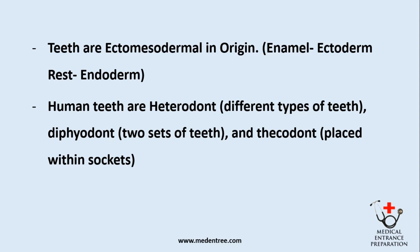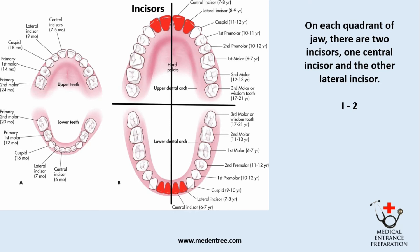Now let's begin with permanent teeth. On each quadrant of the jaw there are two incisors. When we divide the upper maxillary segment into right half and left half, and the lower into right half and left half, we get four quadrants. In each quadrant there are two incisors — the central and lateral — so that makes the incisor count I equal to two.